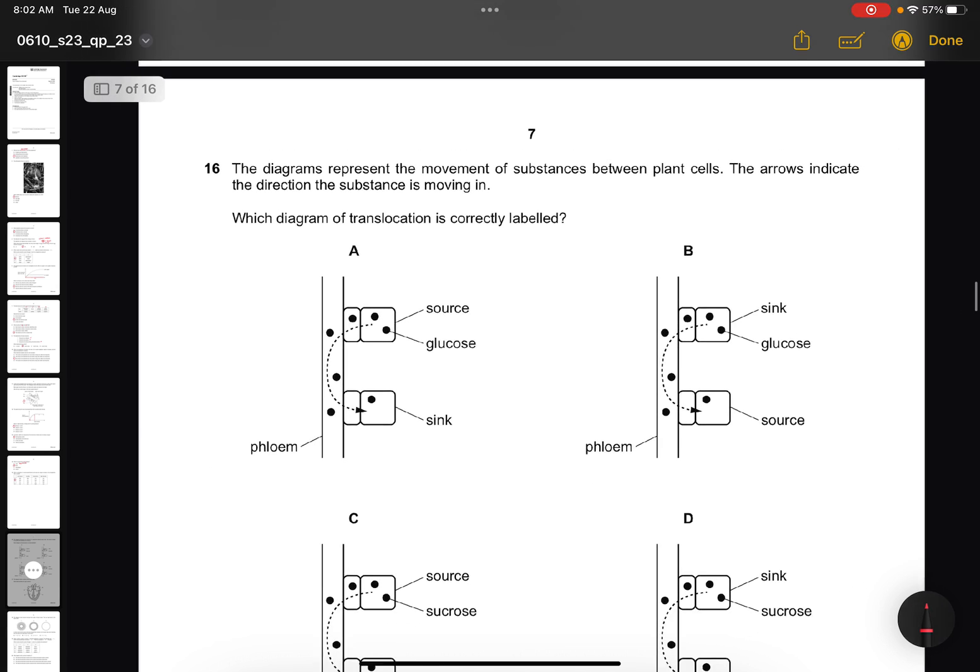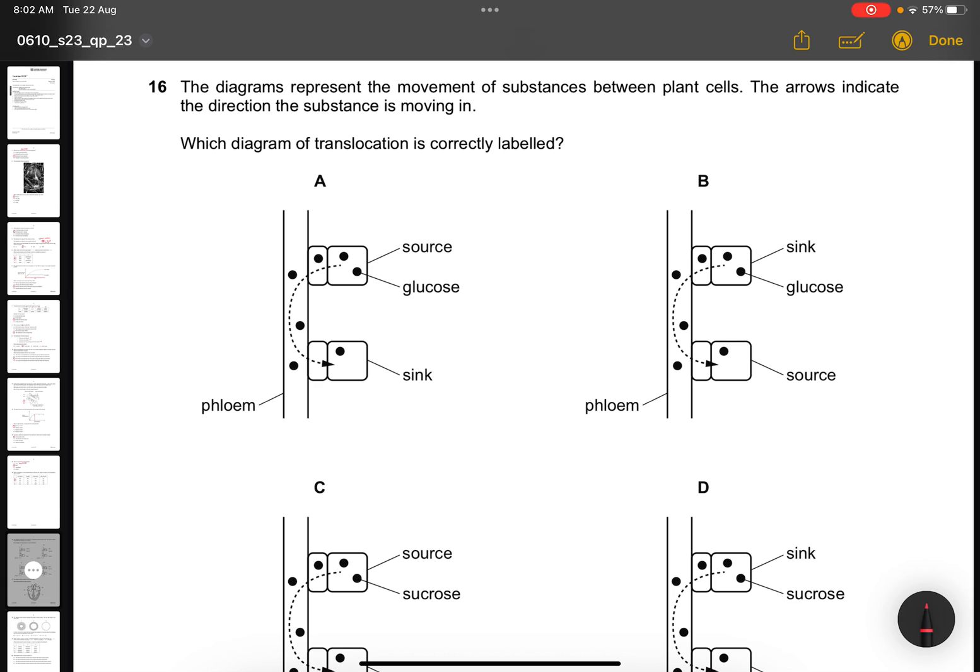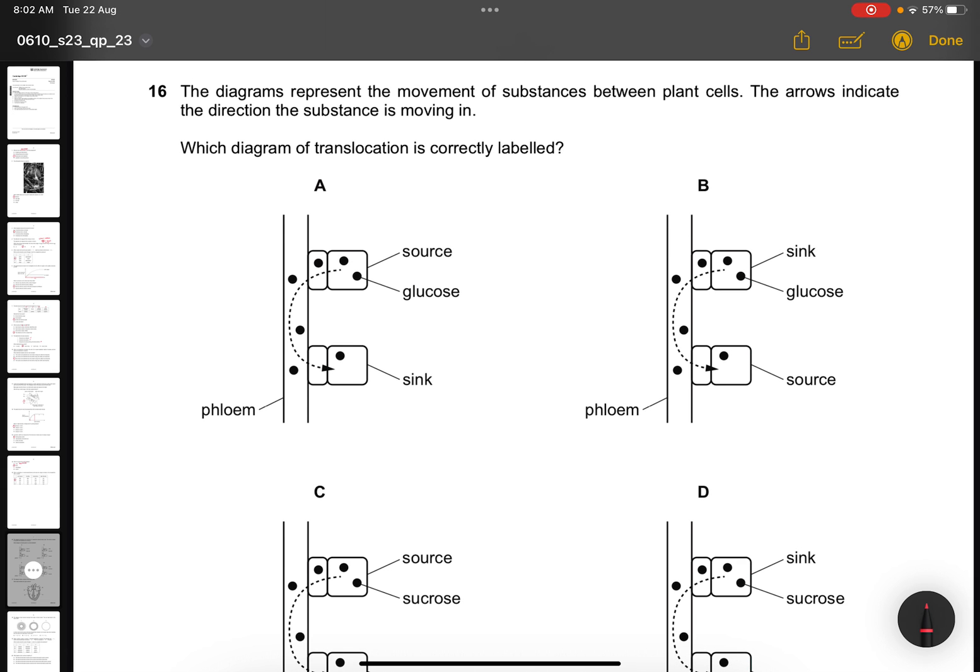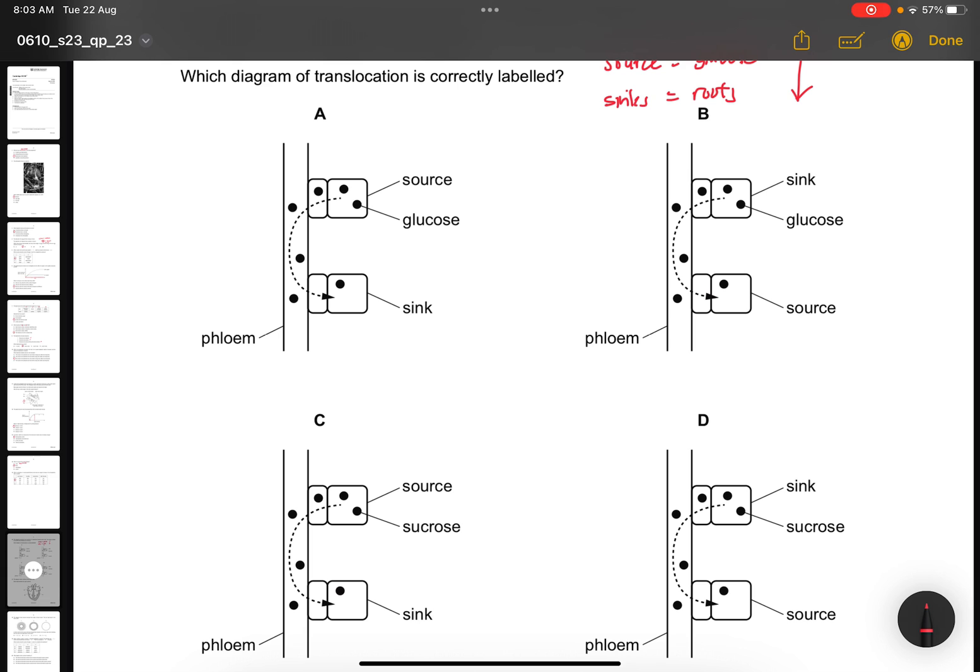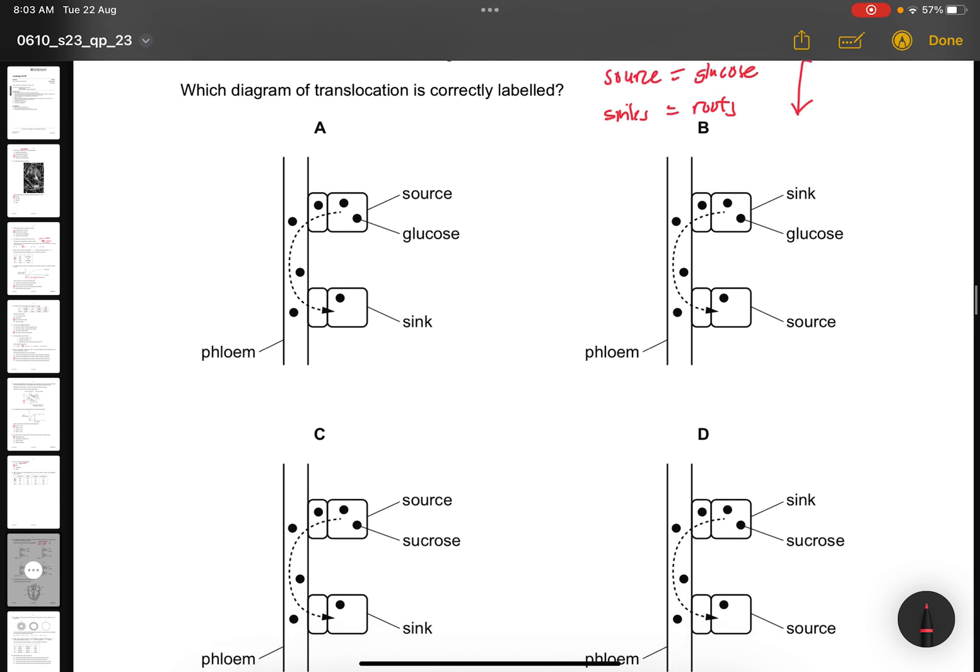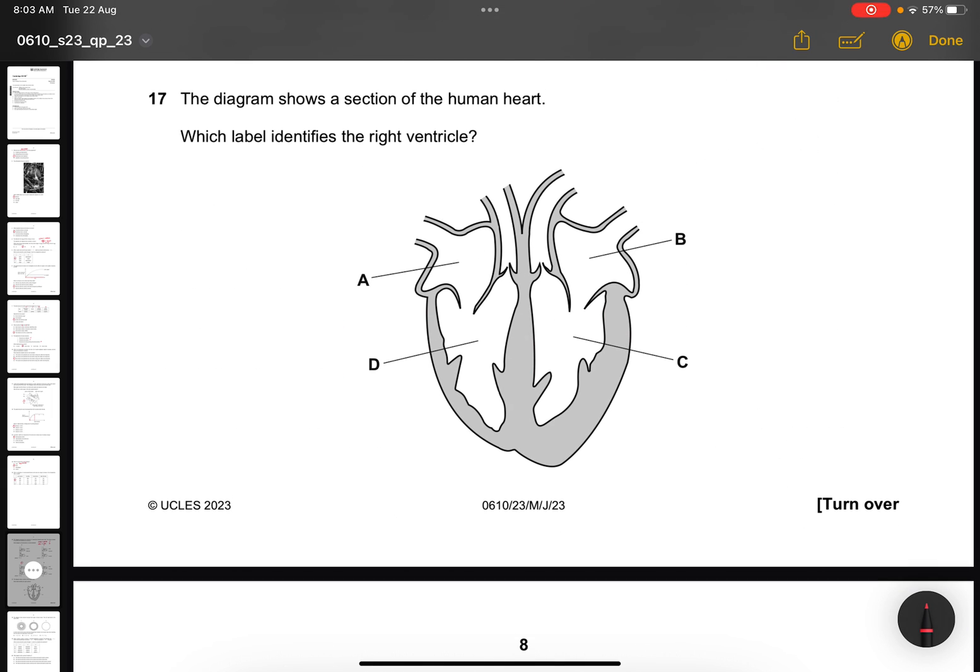Question 16. The diagram represents the movement of substances between plant cells. The arrows indicate the direction of substances moving in. Which diagram of translocation is correctly labeled? We must know that when glucose is produced, it acts as a source. And of course, when it goes back down to the roots, for example, the sinks will be roots. The direction will go downwards, not upwards, because the flow means only one direction. From here, we know that we can only transport glucose in the form of sucrose. So the answer is C. Question 17. The diagram shows a section of a human heart. Which label identifies the right ventricle? Remember, here is the left, here is the right. So the answer is D.